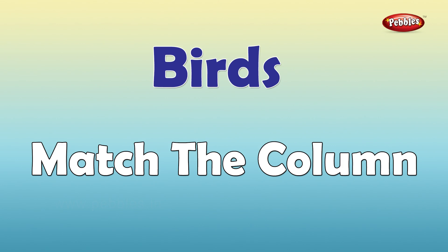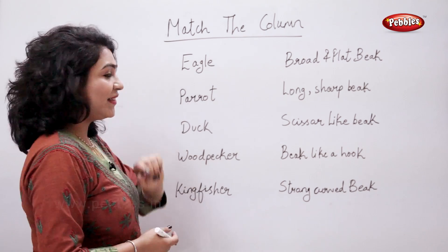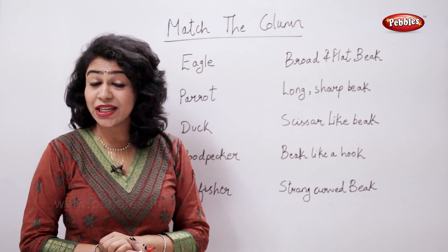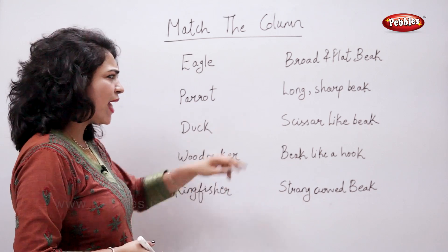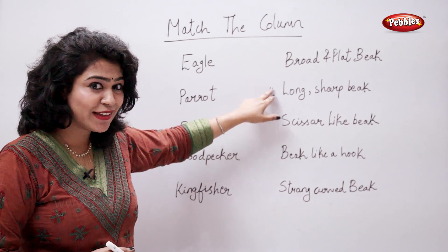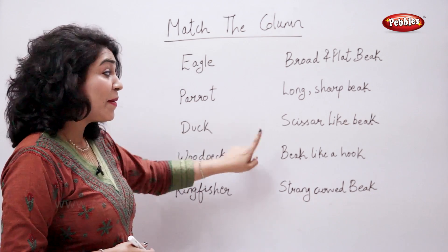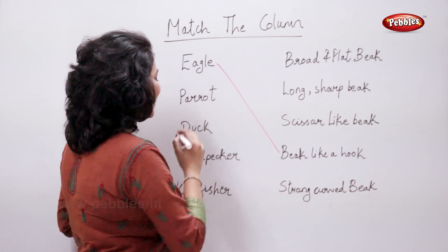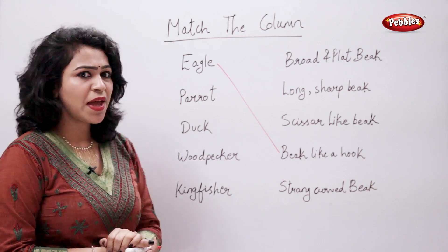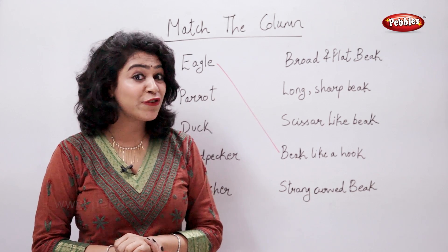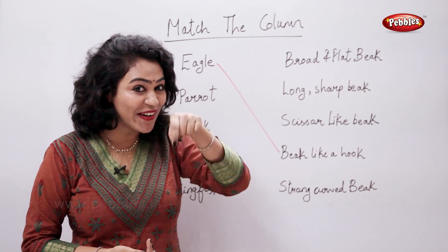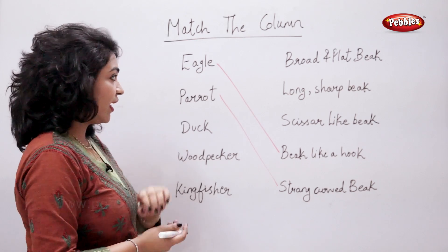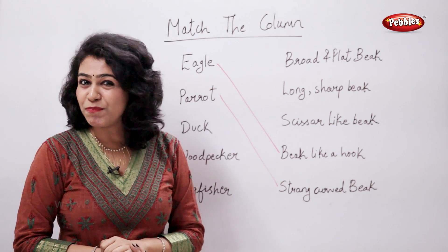Match the column. Eagle — now tell me, what type of beak does an eagle have? Is that a long and sharp beak? No, a beak like a hook. Correct! Parrot — parrot has a strong and curved beak. Duck — duck has a broad and flat beak.